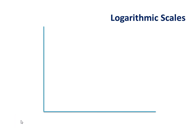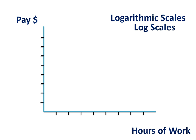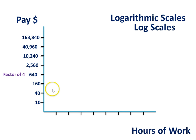Exponential means that the rate is increasing over time, not staying constant as with the first example. So how we deal with exponential data is we use logarithmic scales, or log scales. Log scales work like this: here on this axis we start with 10, but instead of moving up in a linear fashion, we're going to move up in factors of 4. So 10 times 4 is 40, 40 times 4 is 160, 160 times 4 is 640, and so on. You can see that we very quickly get to quite large numbers at the top of this scale.